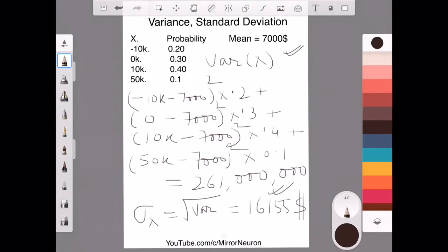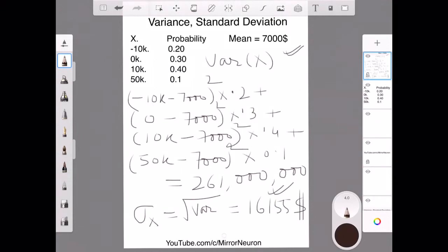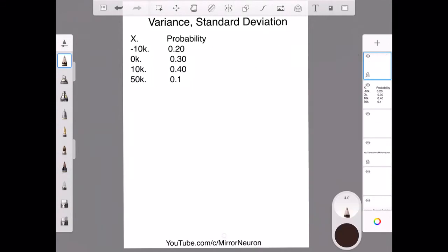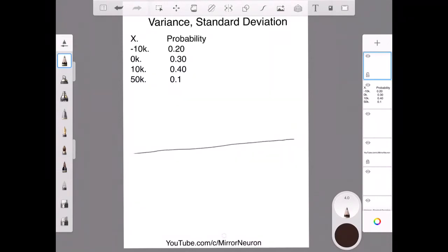So, what does it mean and if we visually try to represent this. So, we will just clear this. So, now what happens is if I draw my random variable in the x axis. So, that means we had something as minus 10k as one of the value, we had 10k and then we had 50k right and on the y axis